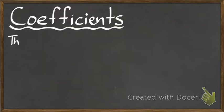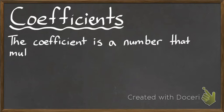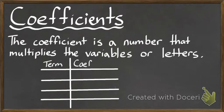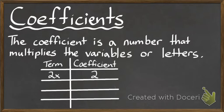Now we need to know what coefficients are. The coefficient is a number that multiplies the variables or the letters that you see in a term or a polynomial. For example, if I have 2 times x, my coefficient is the number out in front — the number I'm multiplying my variable by. So in this case, my coefficient is 2.